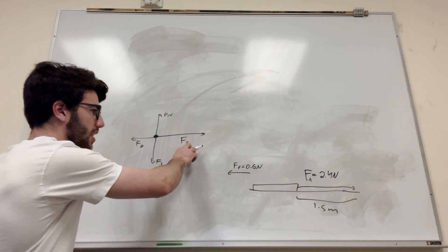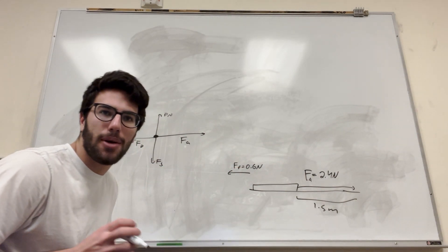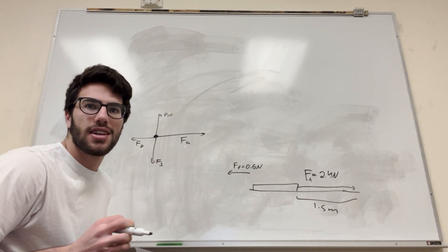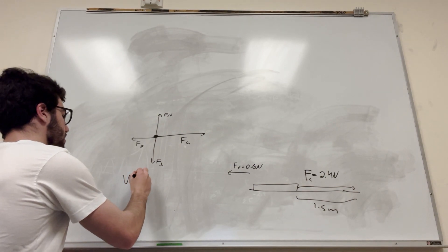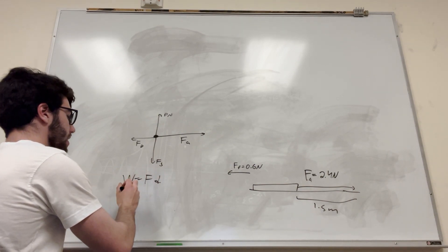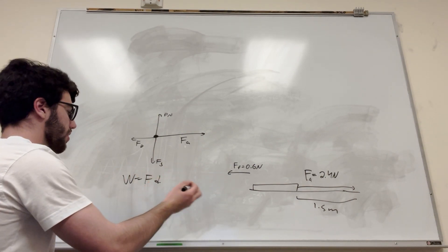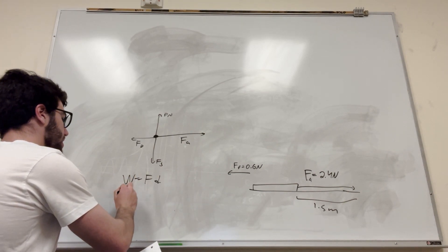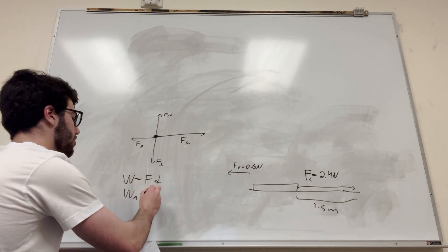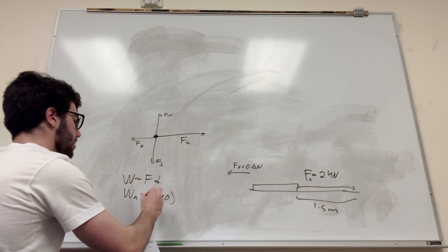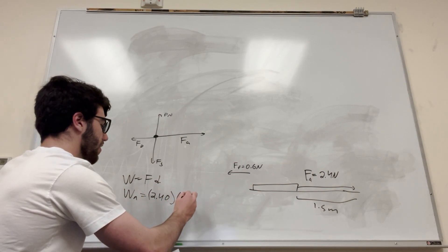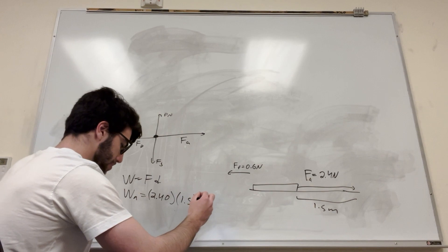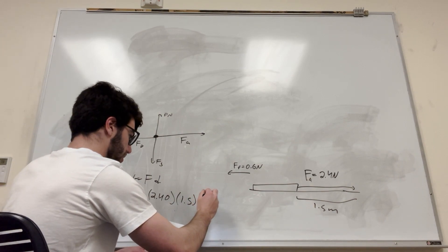Okay, so force applied is 2.4 newtons, and it wants us to know how much work we do with that. So work is equal to force times distance, right? So if we were trying to find out how much work we do, we can say that work from our applied is equal to the force that we applied, so 2.4 newtons, times the distance that we push it, 1.5. And that number is going to come out to be 3.6.